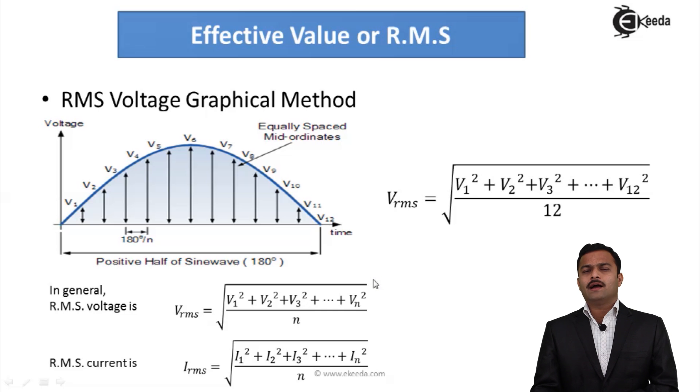In general, if I have N number of values, I will get RMS voltage as V_RMS equal to root of V1² + V2² like that till VN² divided by N. For current, if I replace V by I, I will get I_RMS as root of I1² + I2² + I3² up to IN² divided by N.